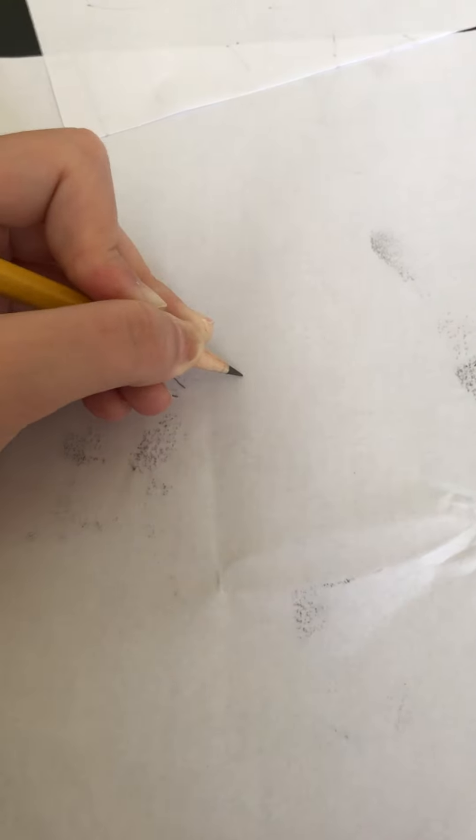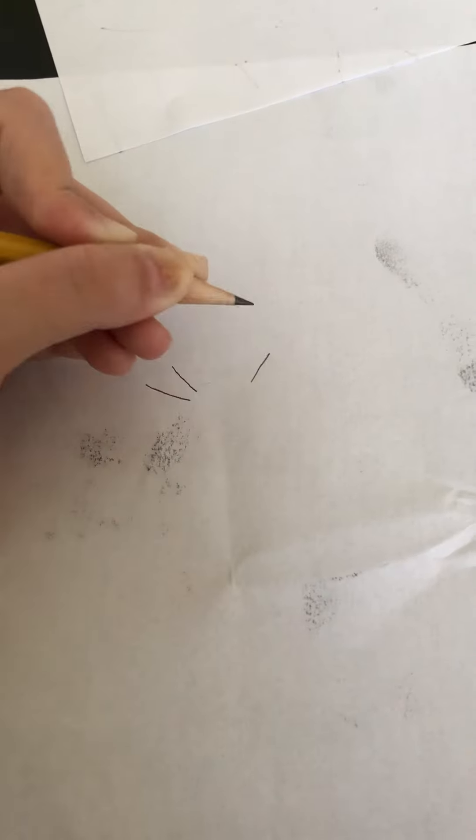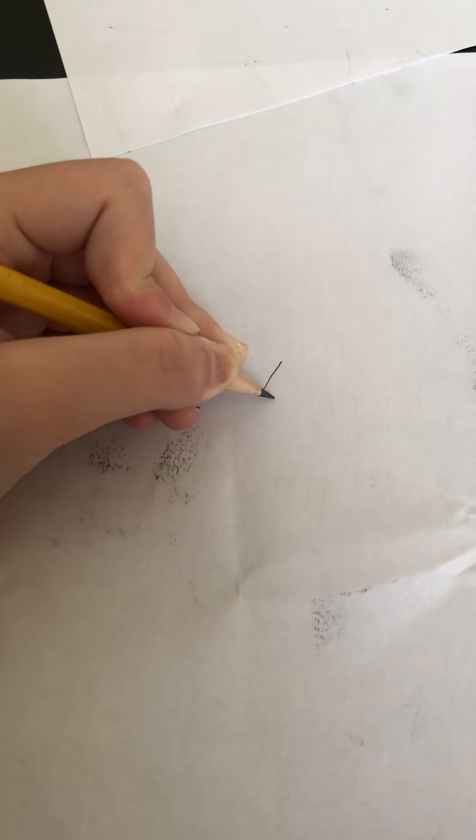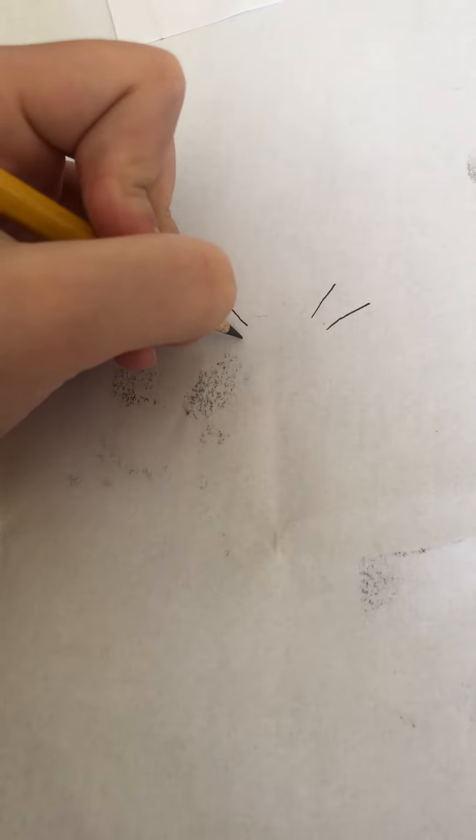Then you're going to make another line just like the same one, and then you're going to make the same one too. So now it looks like this - these are the sirens.